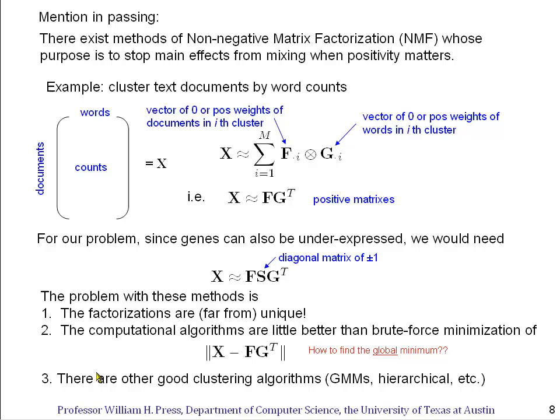And then the third reason that I think non-negative matrix factorization algorithms are not universal is that they're clustering algorithms, but there are a lot of other good clustering algorithms around that are computationally efficient. In fact, we've already learned about Gaussian mixture models, about hierarchical clustering, and so forth. There's a place for non-negative matrix factorization, but that place is not to replace all the beautiful linear algebra when you can use singular value decomposition and principal component analysis.